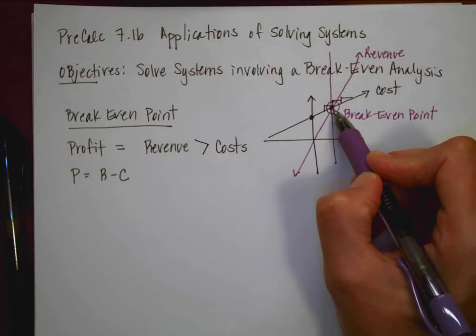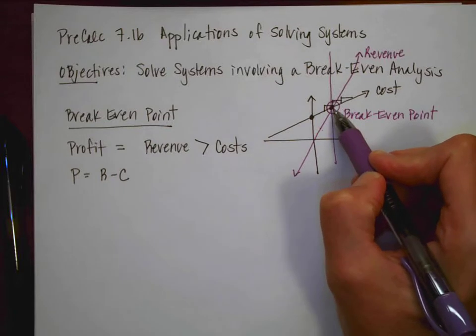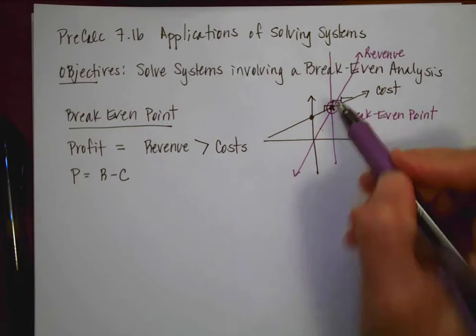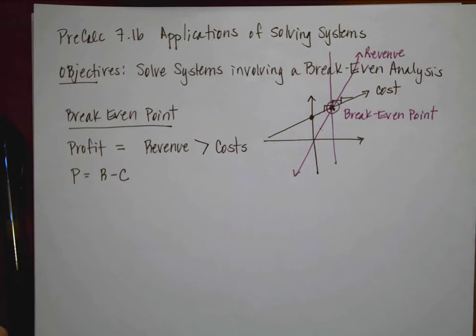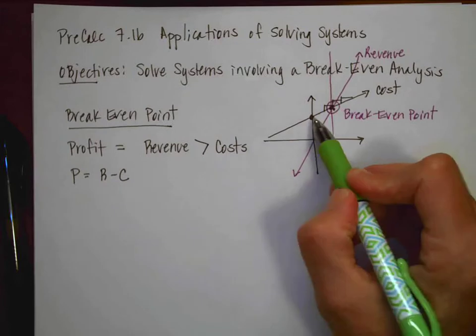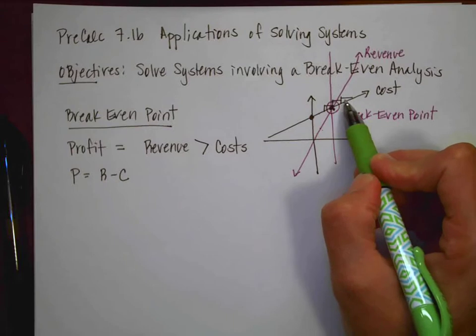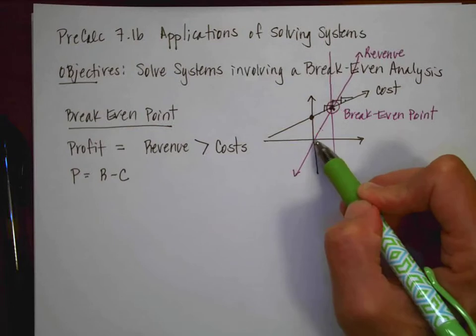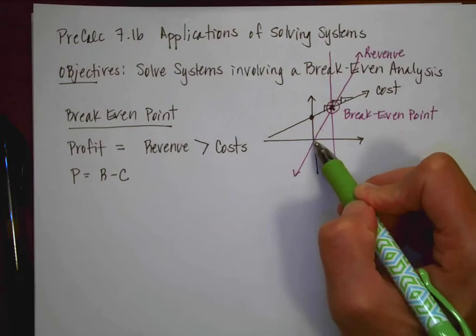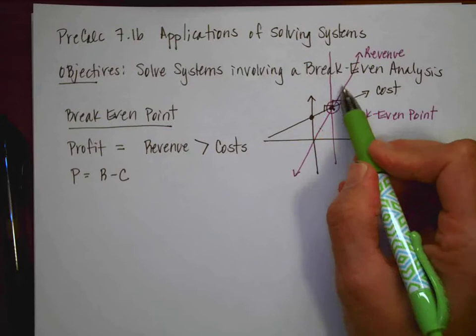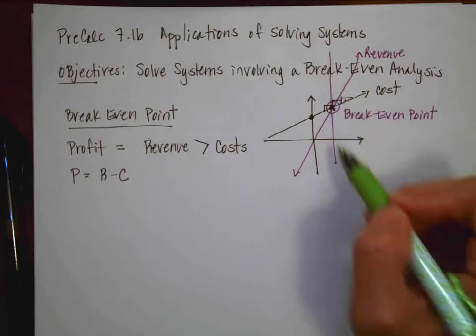Oftentimes it's used to figure out how many items I need to sell so that I can realize a profit. Sometimes you will use a break-even plan when I want to do something like choose between cell phone plans. One cell phone plan might have a high upfront cost and low charges for minutes or data. The other cell phone plan might have zero upfront cost but have a very steep cost for data or minutes.